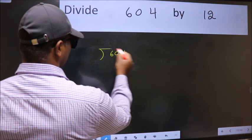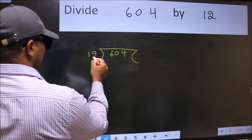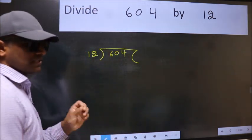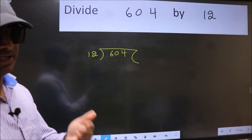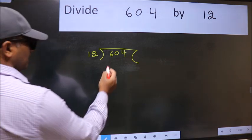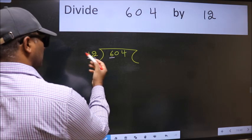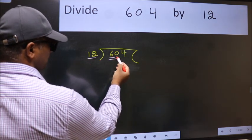604 here, 12 here. This is your step one. Next, here we have 6 and here 12. 6 is smaller than 12, so take two numbers, 60.